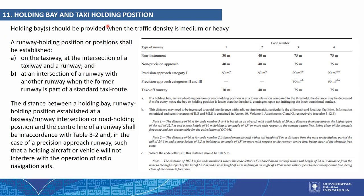The last component is holding bay and taxi holding position. Holding bays should be provided when traffic density is medium or heavy. A runway holding position shall be established on the taxiway at the intersection of a taxiway and a runway, and at the intersection of a runway with another runway when the former runway is part of a standard taxi route. Requirements are given based on code number (1–4) and runway type: non-instrument, non-precision approach, precision approach category I, and precision approach categories II/III.